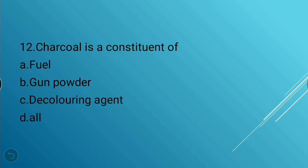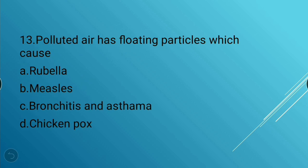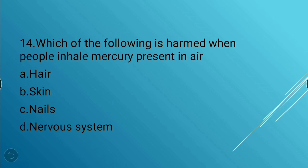Next question: Polluted air has floating particles which cause — rubella, measles, bronchitis and asthma, or chickenpox. The answer is bronchitis and asthma — polluted air has floating particles which cause bronchitis and asthma.